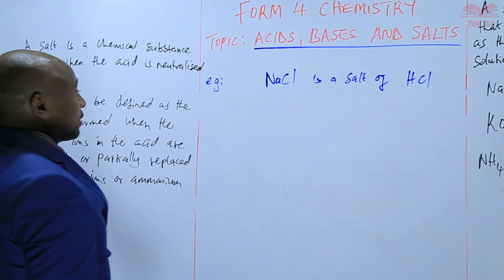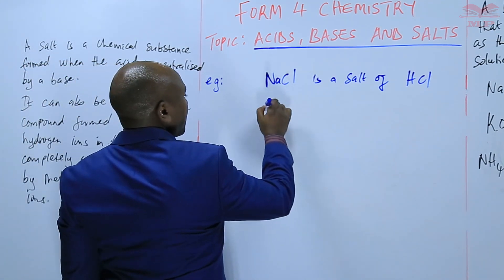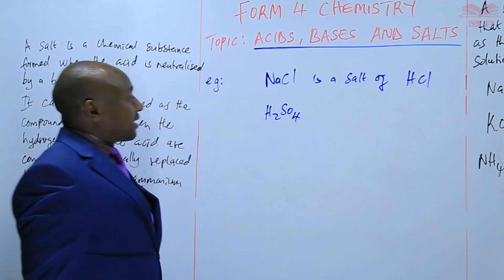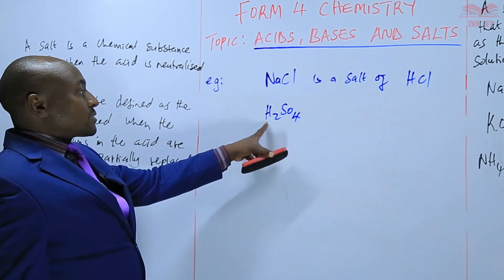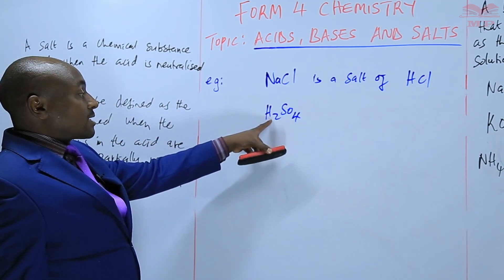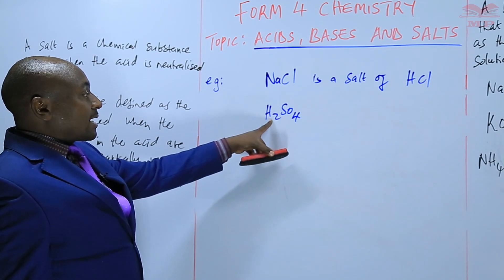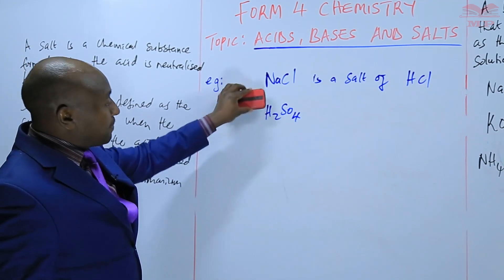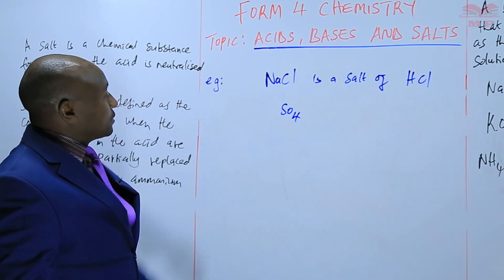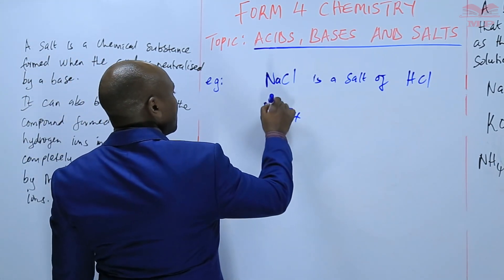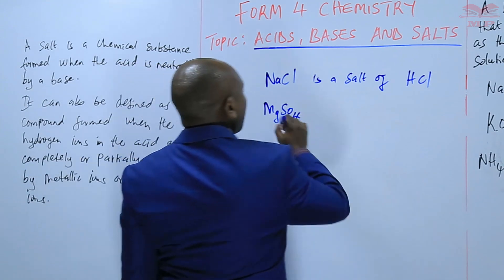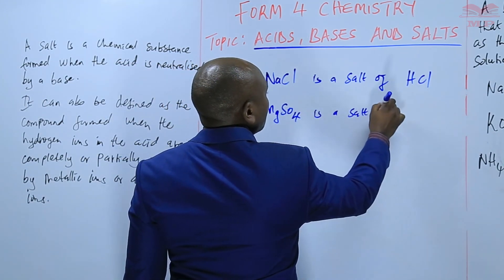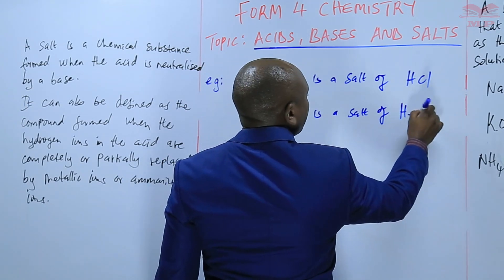If we have sulfuric acid and the hydrogen ions in the sulfuric acid are replaced by metallic ions such as magnesium, we get magnesium sulfate. So magnesium sulfate is a salt of sulfuric acid.